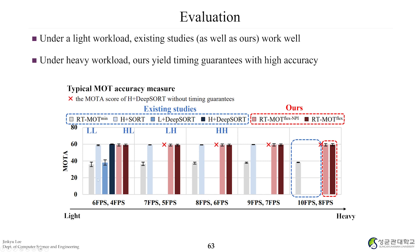With four tasks, under light workload, LL, HH, and HL are schedulable. As we increase workload, other existing studies miss deadlines except LL, which maintains timing but has very low accuracy. Our approach gives timing guarantees while maximizing accuracy — better than LL in accuracy while remaining schedulable.